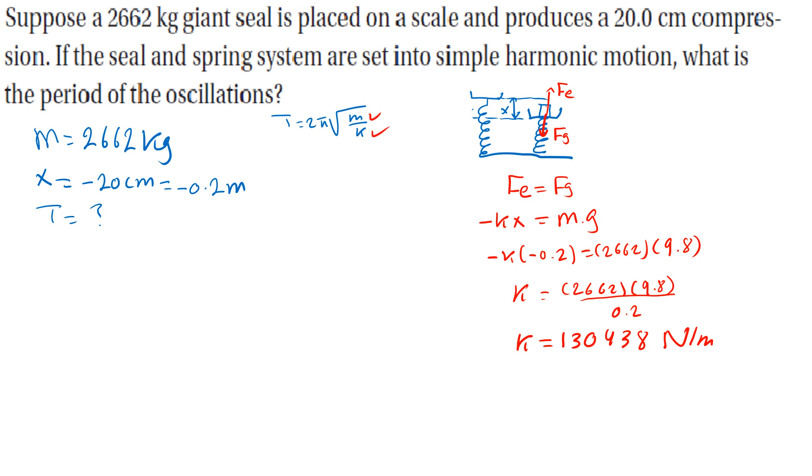For the period we will do this. So this was step 1, now step 2. T equals 2π square root of M over K.